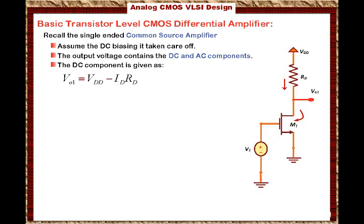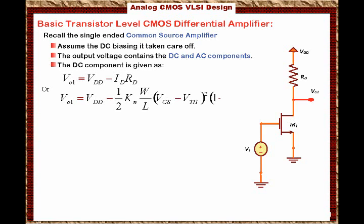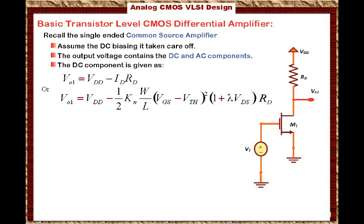Make sure you master and visualize it. The DC voltage at the output equals VDD minus the voltage drop across the resistor, which is ID times RD. We can substitute for the expression of the DC current, giving VOUT1 equals VDD minus one-half times KN times W/L times (VGS minus VT) squared, multiplied by (1 plus lambda times VDS), all multiplied by RD. That is the DC voltage at the output.